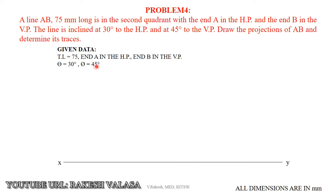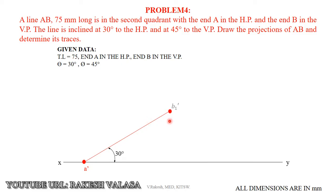First, draw the XY line and locate point A on the XY, because end A is in the HP — that means we can get front view point A dash on the XY line. From point A dash, draw the 30 degrees line; this gives the initial front view, and the endpoint is named B1 dash. This is the initial front view, which represents the true length.